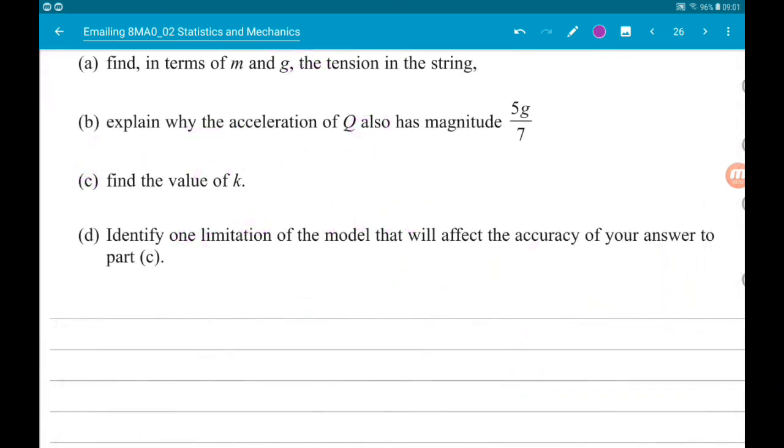And part D for one mark wants us to identify one limitation of the model that will affect your answer to part C. So there's quite a few things we could say here. The string might not be inextensible, so it might have some stretch in it. We haven't taken into account the mass of the string. The string might not be light. The balls might not move freely. There might be resistant forces like air resistance for example. Anything like that you say and you would be golden.